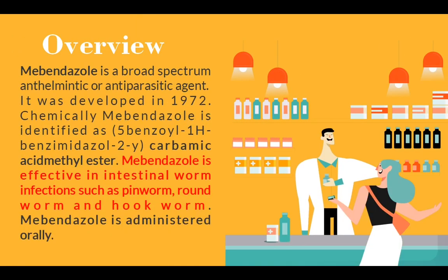Let's start with the overview. Mibendazole is a broad spectrum anthelmintic or antiparasitic agent. It was developed in 1972. Chemically, mibendazole is identified as the carbamic acid methylester. Mibendazole is effective in intestinal worm infections such as pinworm, roundworm and hookworm. Mibendazole is administered orally.